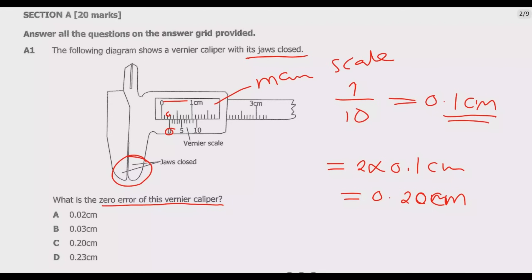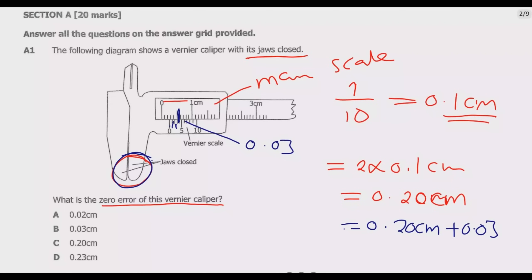Now we need to read the Vernier scale. The reading is where the line from the main scale coincides with the line from the Vernier scale. That coincidence is at position 3, so the Vernier scale reading is 0.03 centimeter. Adding the two: 0.20 centimeter from the main scale plus 0.03 centimeter from the Vernier scale gives a zero error of 0.23 centimeter. Every subsequent measurement must have this subtracted. So D is the correct answer.